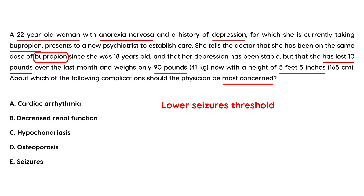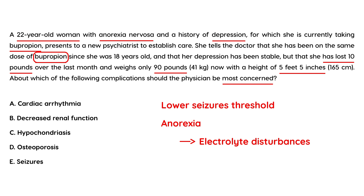When a patient has anorexia, she or he is at an increased seizure risk because when people lose that much weight they have electrolyte disturbances. Anorexia can cause electrolyte disturbances, and that is very concerning to the physician. So in this case, the complication to be most concerned about with bupropion in a patient with anorexia nervosa is seizures.